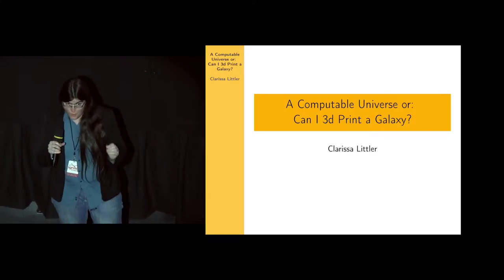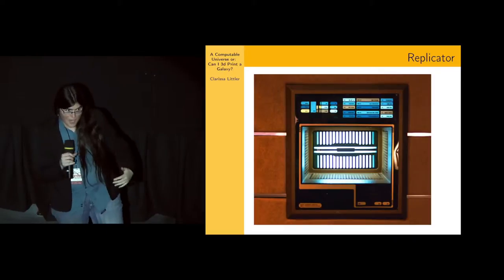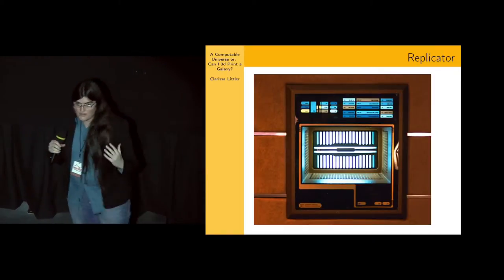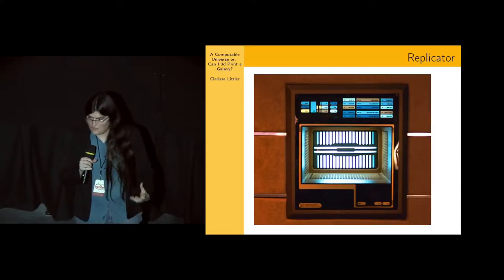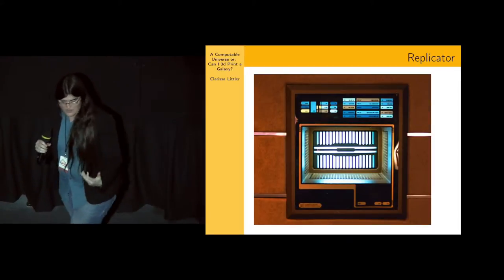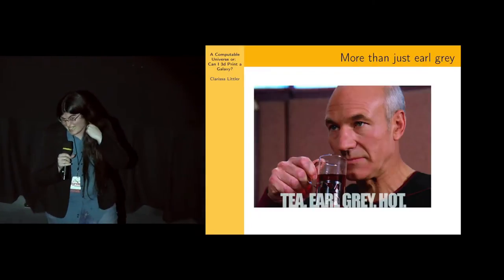But first, we're going to start with Star Trek, specifically replicators, because replicators were those cool devices in Next Generation that could just take energy and make matter out of it. And you apparently could make just about anything you wanted if you had enough energy, even if a lot of times people just use it to make hot tea.